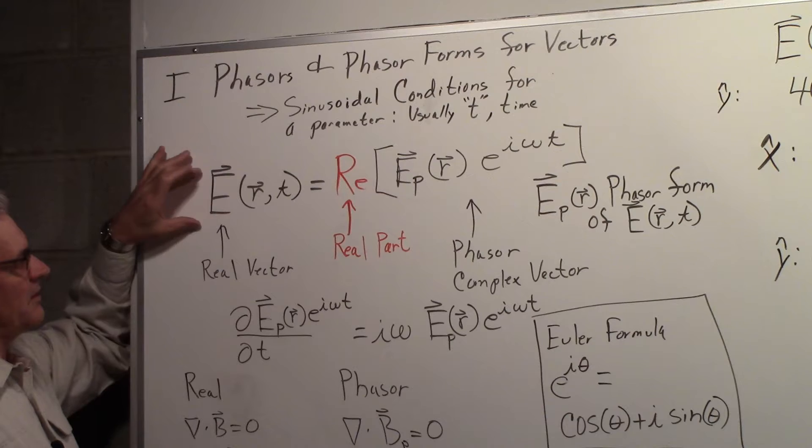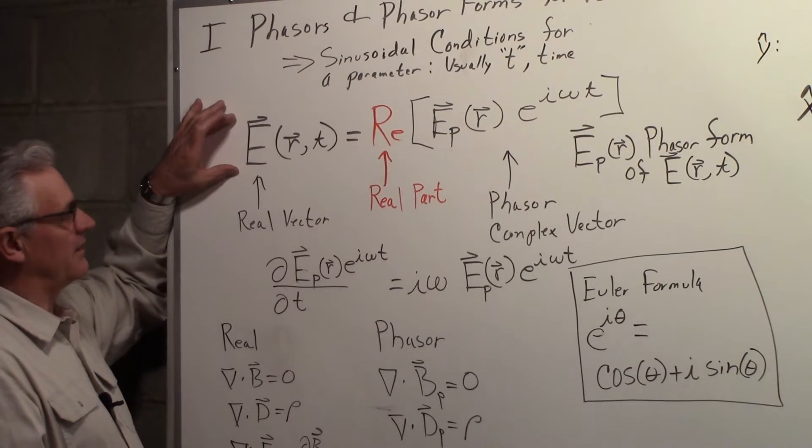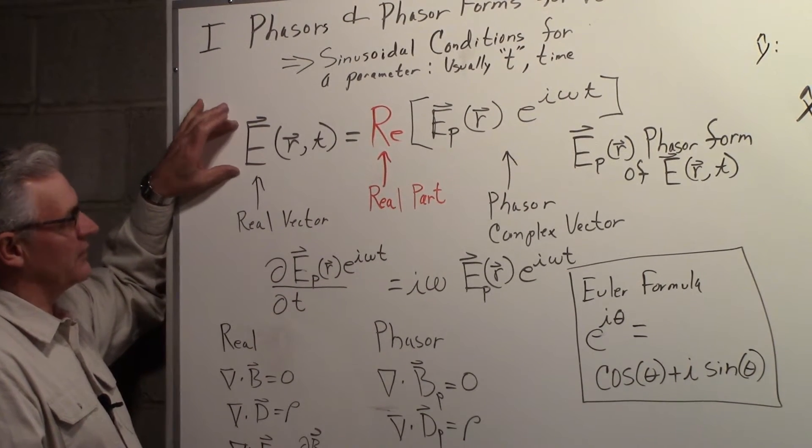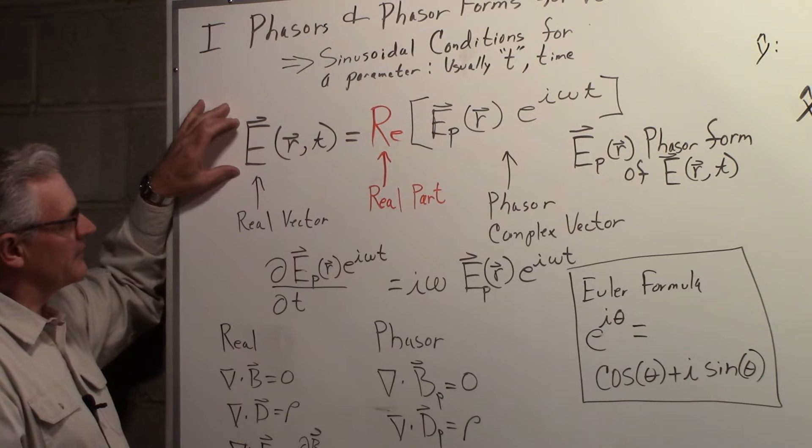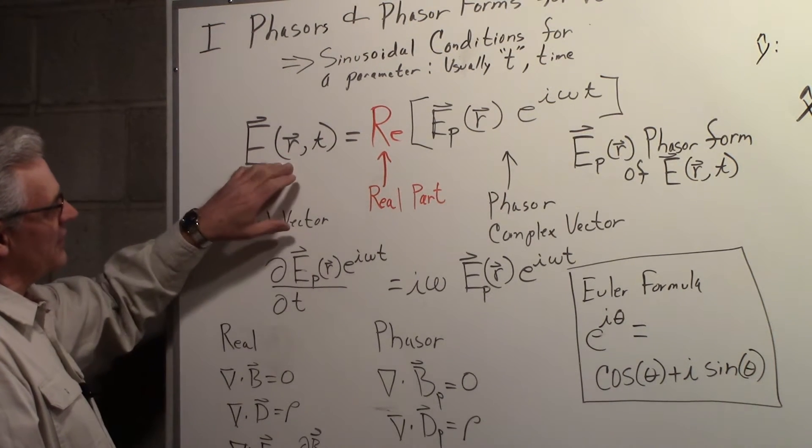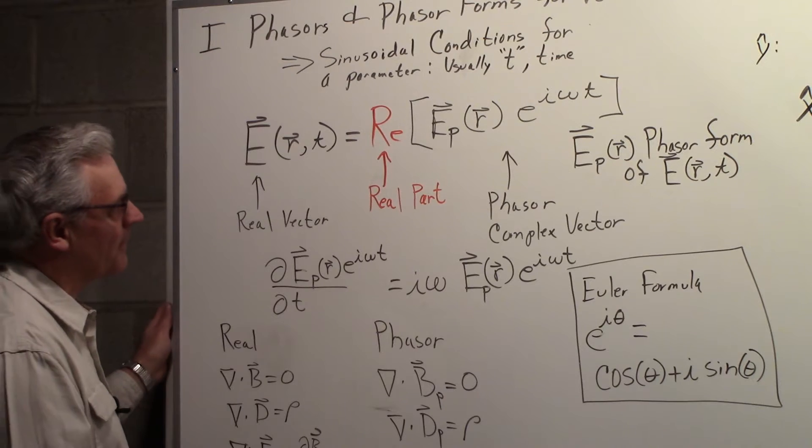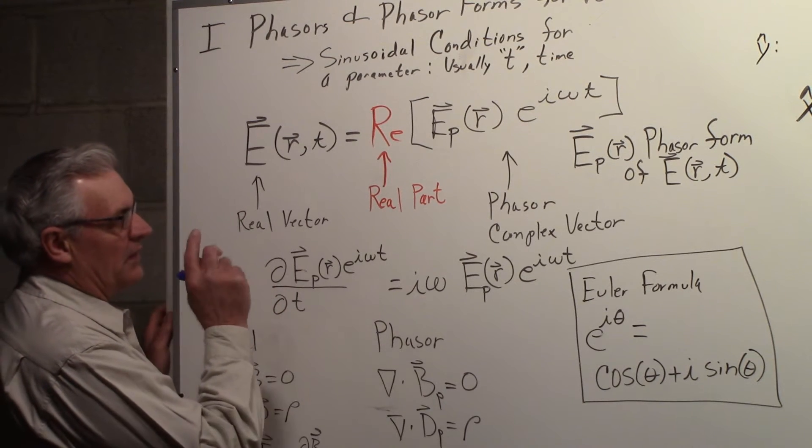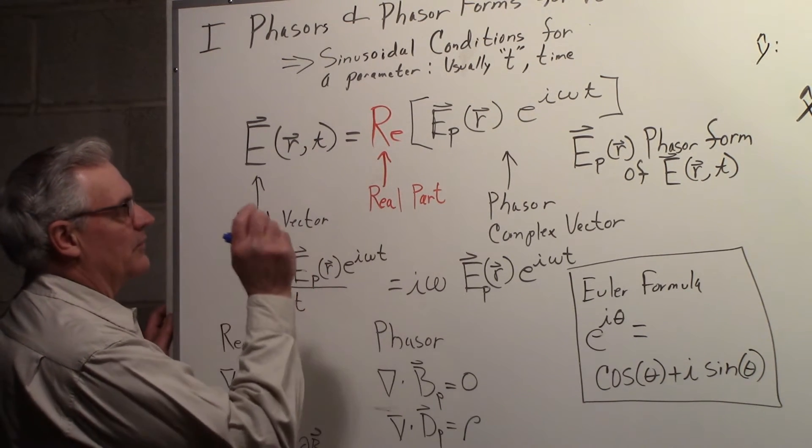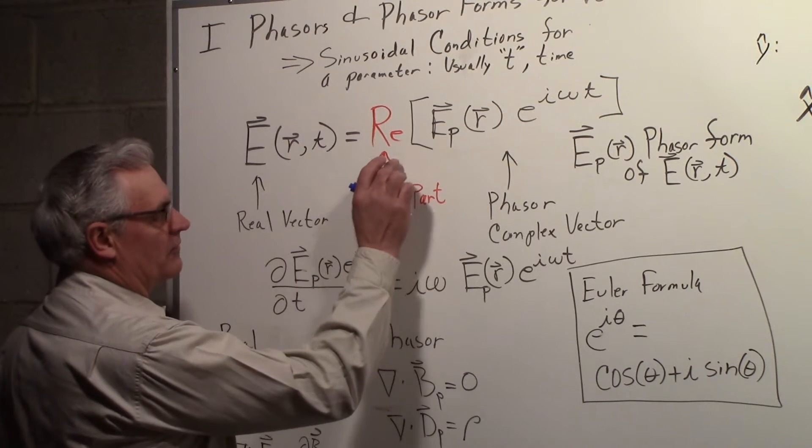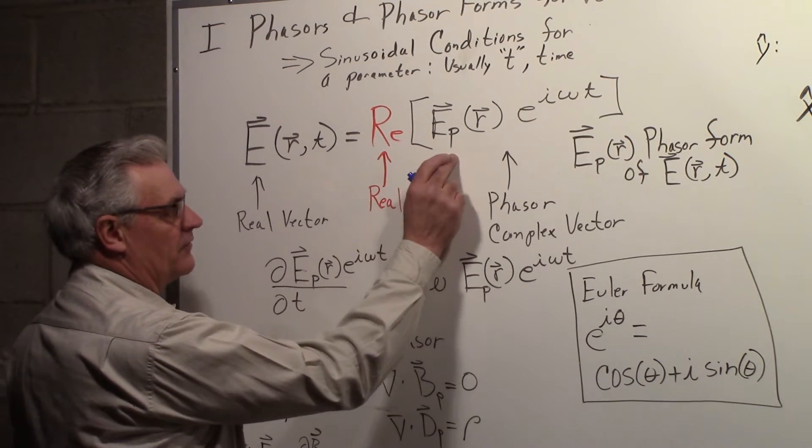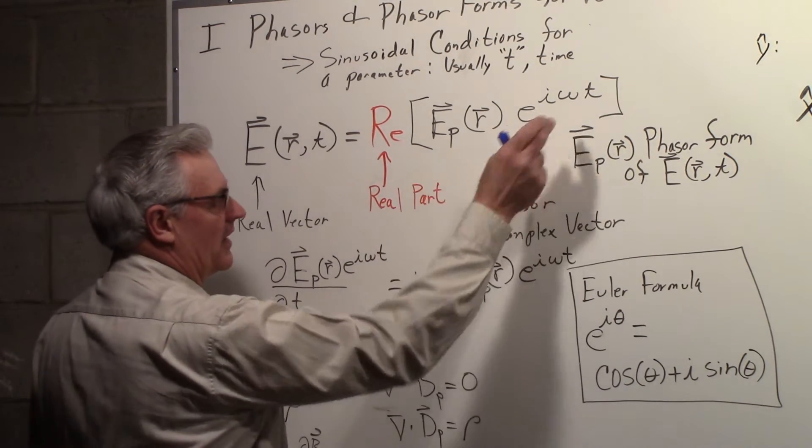You can imagine this vector E representing the electric field of an electromagnetic wave, and it would be a function of position and time. In terms of a phasor, we would say that that is equal to the real part of a phasor form of that vector, e to the i omega t.